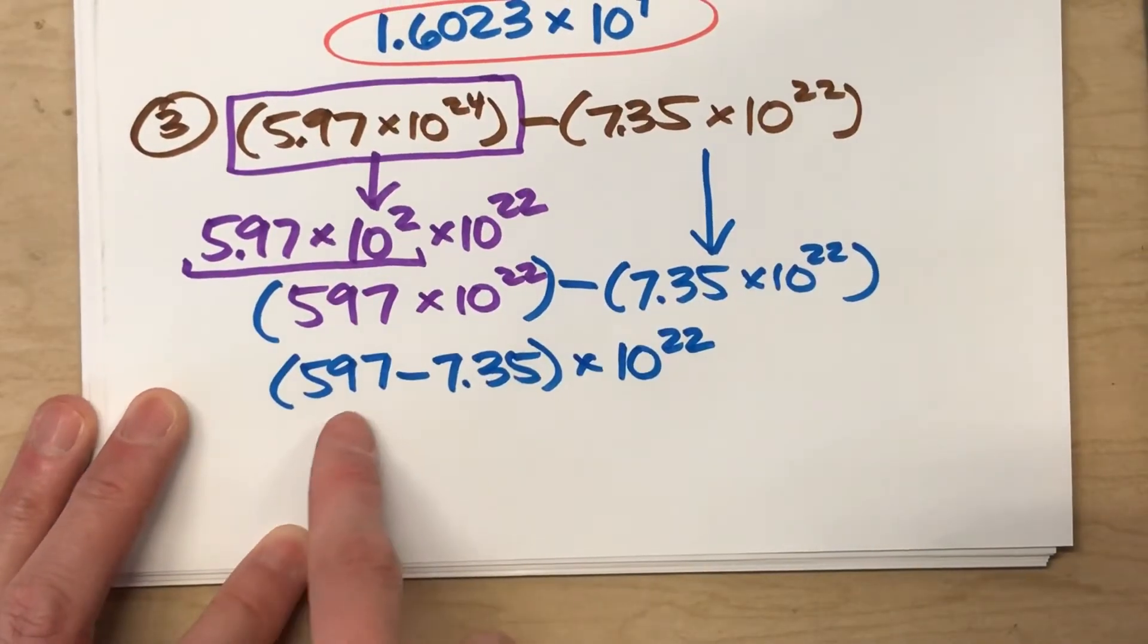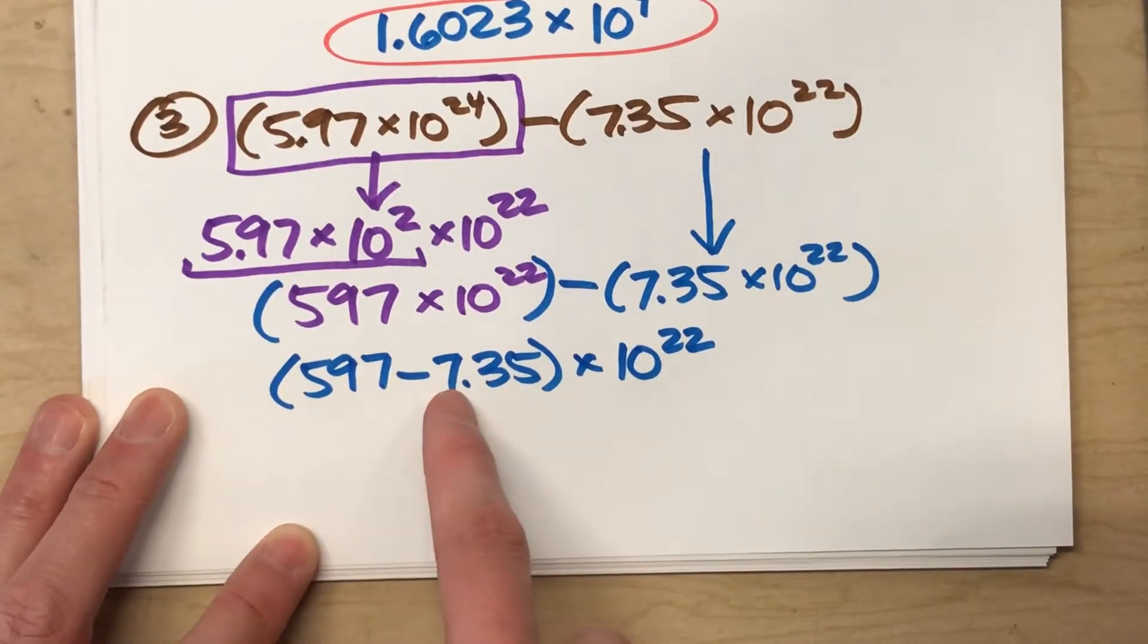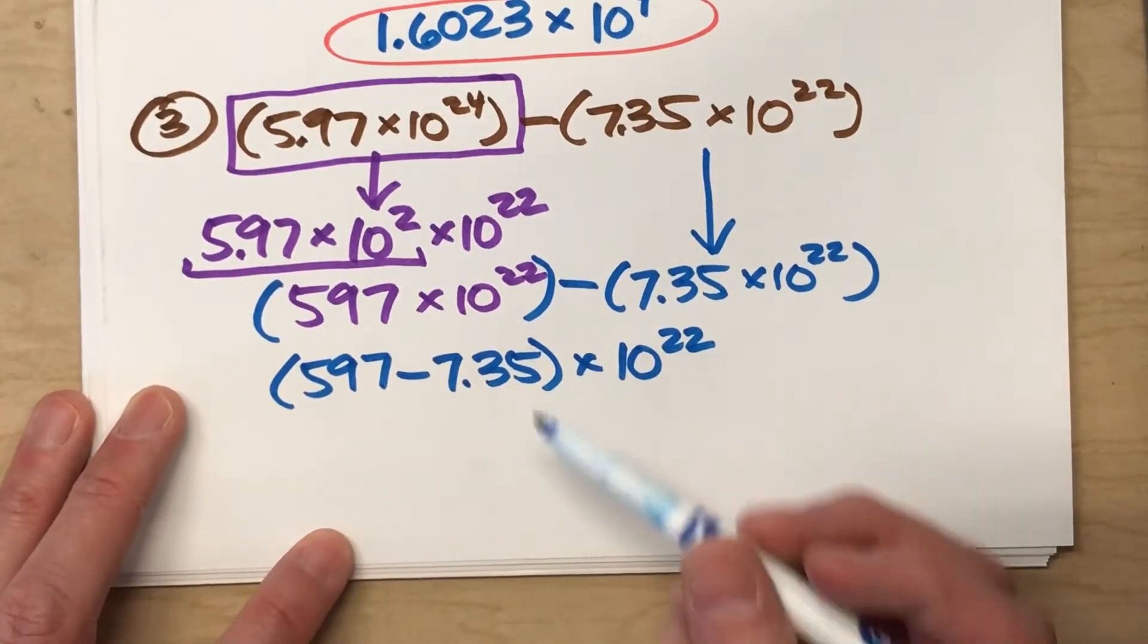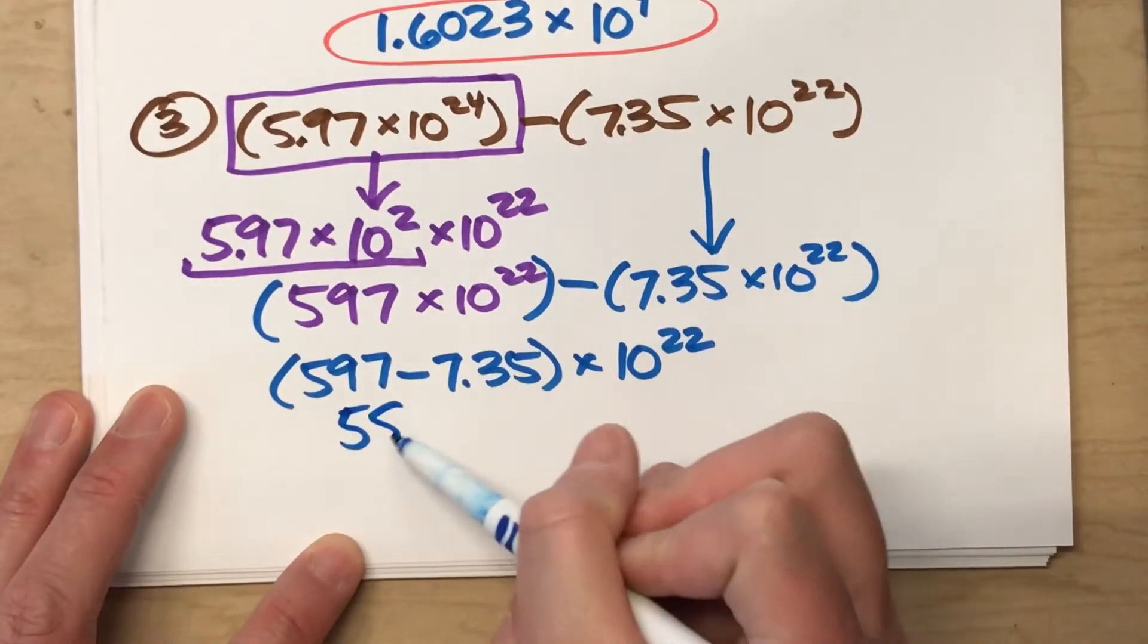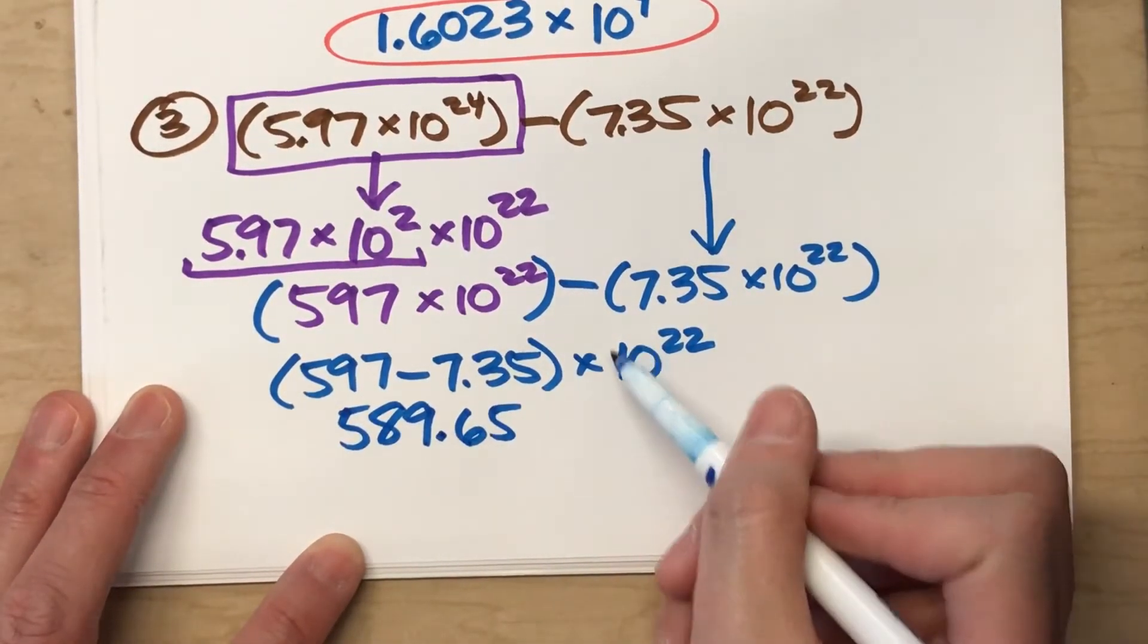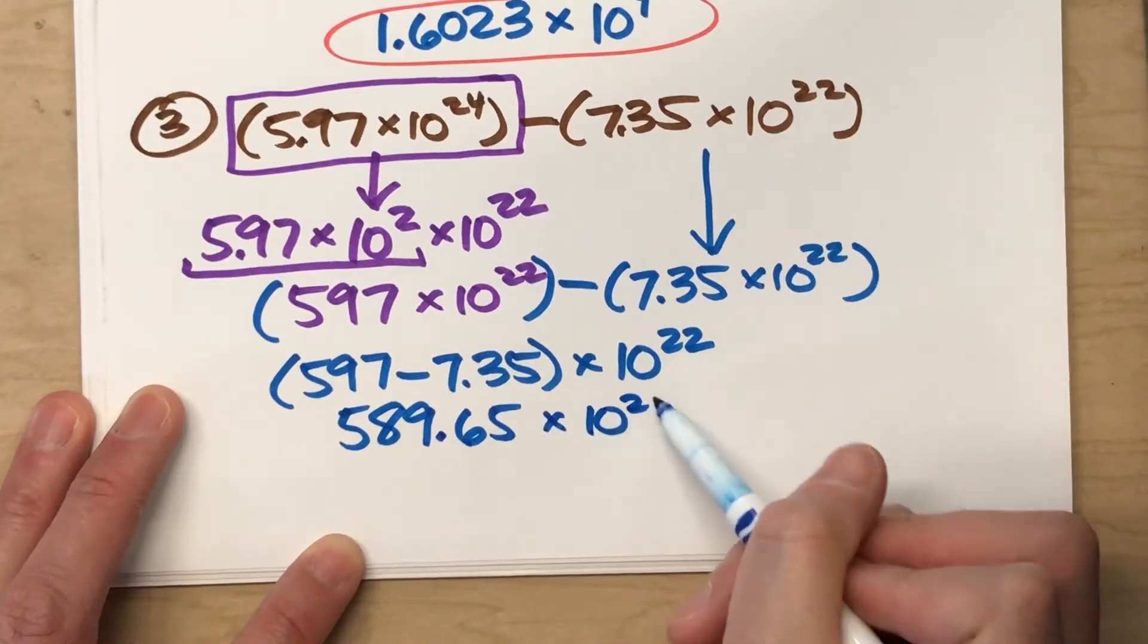And I don't even need a calculator for this. 597 minus 7.35. 597 minus 7 is 590, minus 0.35 more. That's gonna get me 589.65. And then it's still times 10 to the 22nd power.